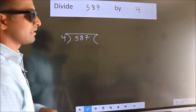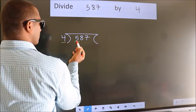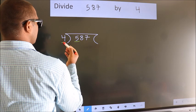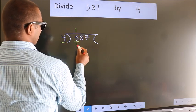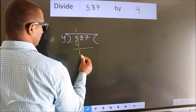Next, here we have 5, here 4. A number close to 5 in 4 table is 4 once 4. Now we should subtract. We get 1.